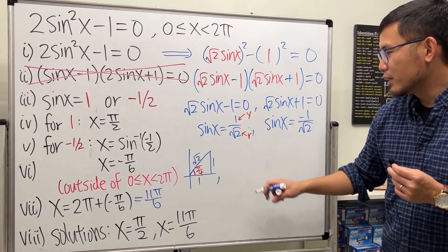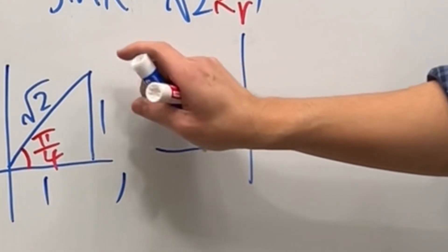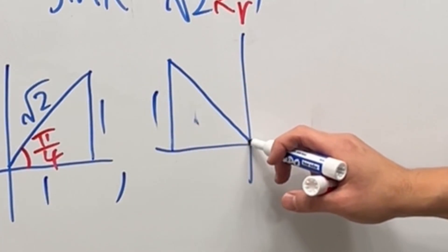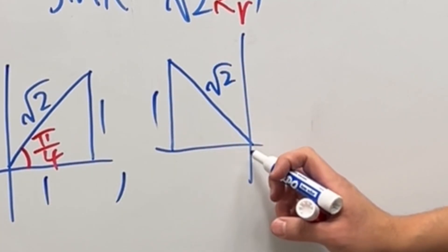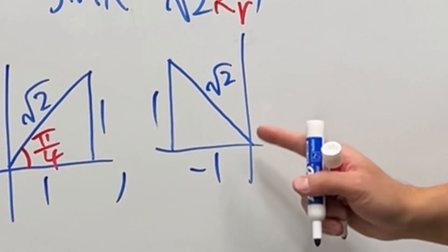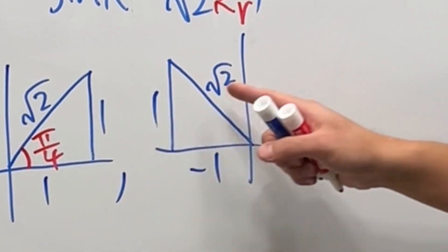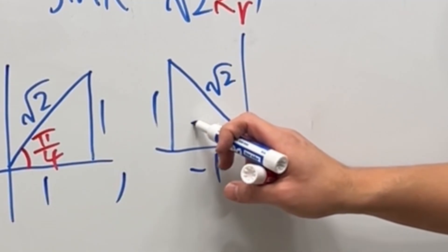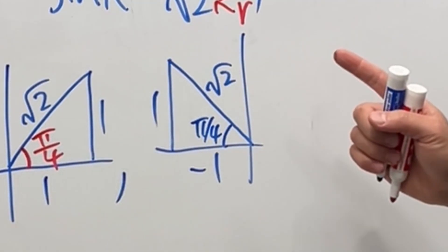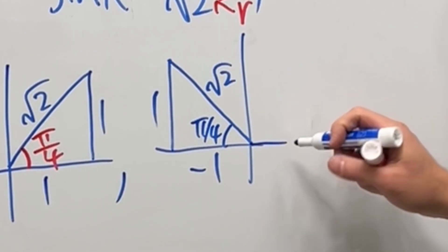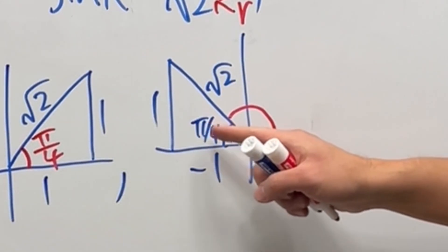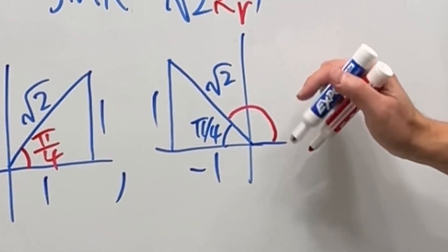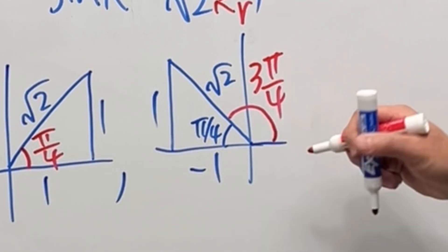We can construct another reference triangle by moving the horizontal side to the other side, where y is still positive 1 and r is square root of 2. Sine is still 1 over square root of 2 here. But we measure the angle from the positive x-axis: the reference angle is π over 4, and the full angle going through the second quadrant is π minus π over 4, which equals 3π over 4. That's the second answer.